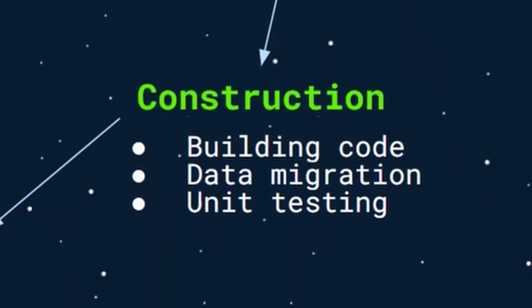For construction, the steps of building code, data migration, and unit testing are used to minimize development costs by optimizing resources and avoiding unnecessary mistakes. For building code, programming platforms like Python, Objective-C, and Java aid developers in creating a general program source code, which is essential to begin the base functionality of the software application.